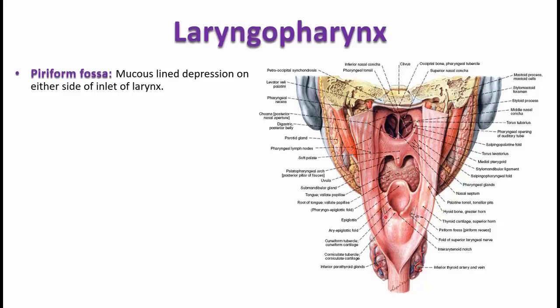The piriform fossa is actually a deep fossa situated on the lateral wall of the laryngopharynx. It is also called the piriform recess. Now, what are the boundaries of this piriform fossa? Laterally, it is formed by the lamina of the thyroid cartilage and the thyrohyoid membrane.